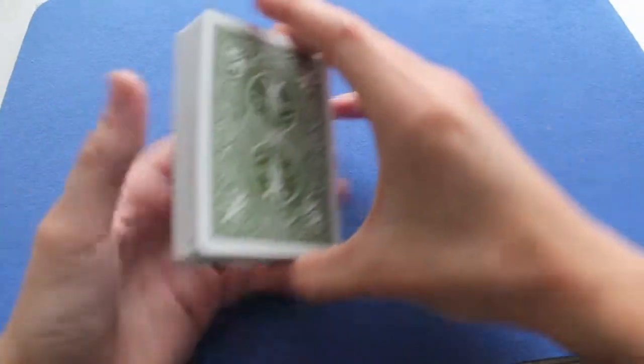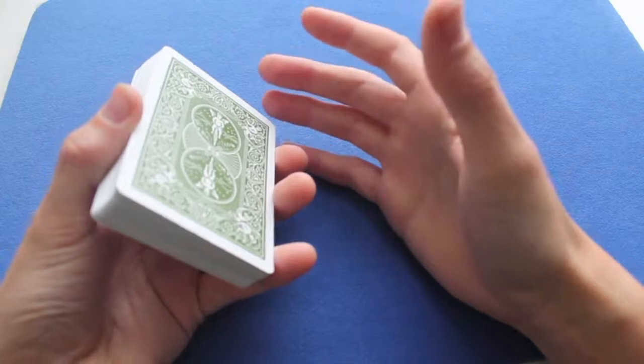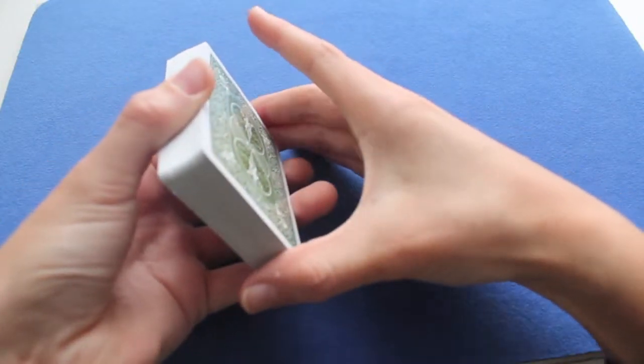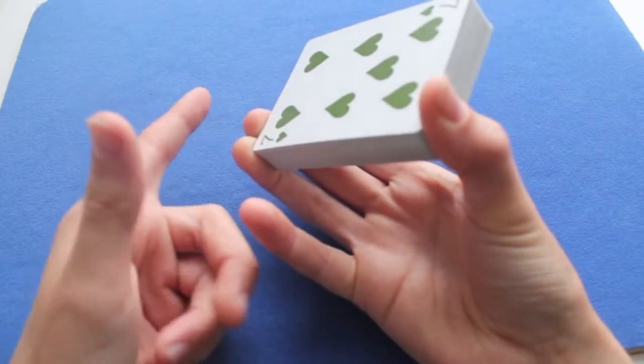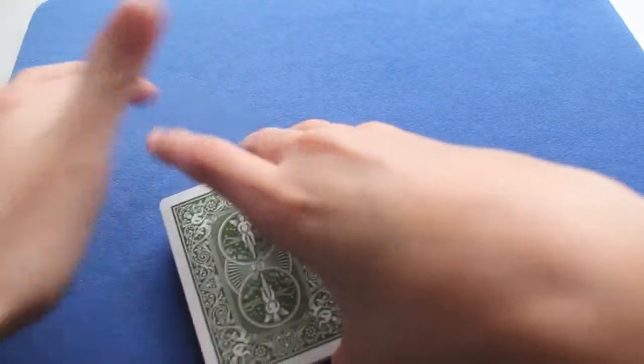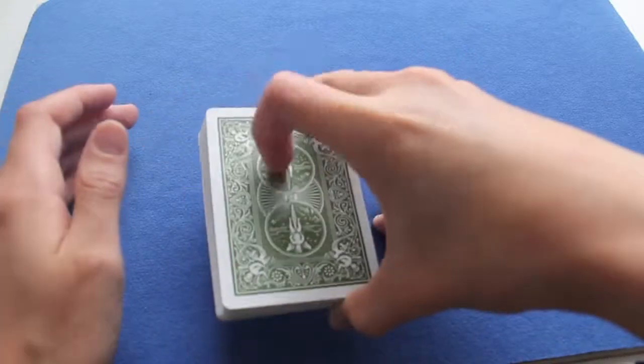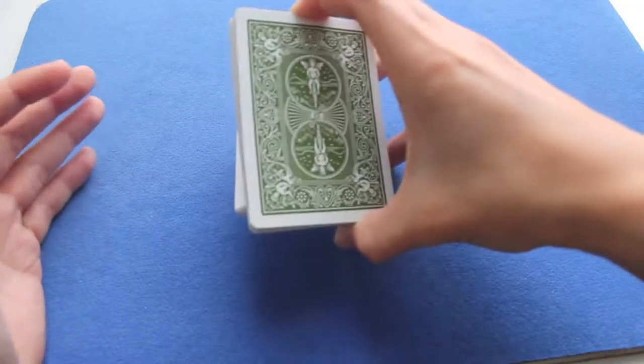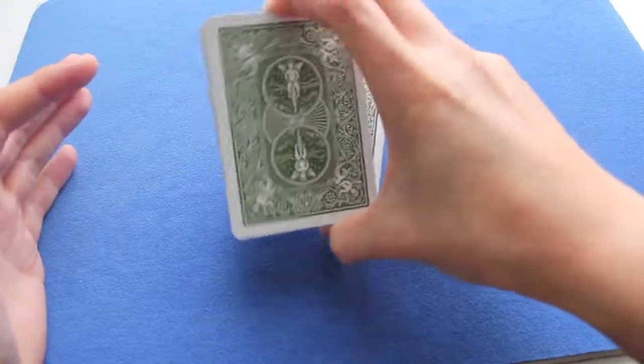So you swing cut. First you hold the deck in biddle grip with thumb at the bottom right and the third and second finger at the top right, and your first finger just hanging out. So you swing cut with the first finger like this. That's a swing cut.